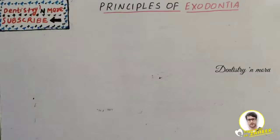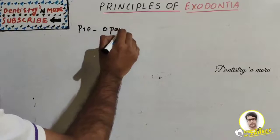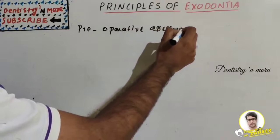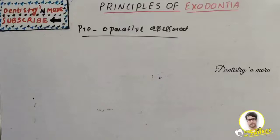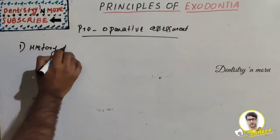How do we start exodontia? That is the pre-operative assessment — assessing whether a person is ready for an extraction or not. The first thing is to take a proper history of the patient, that is a medical history.